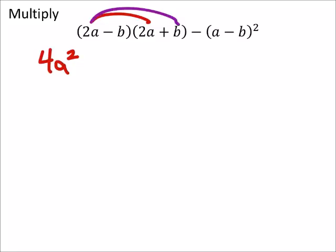Then I've got 2a times this b, so plus 2ab. And then I've got negative b times 2a, so negative 2ab. And negative b times b, which would be negative b squared.